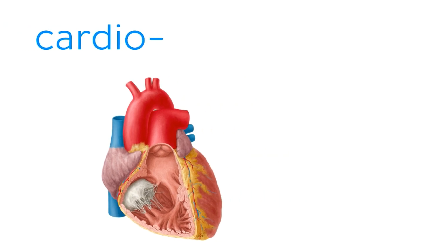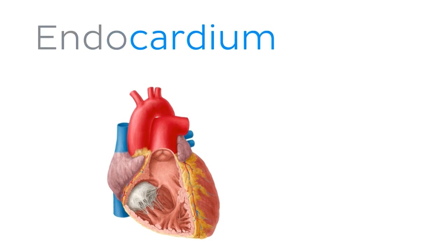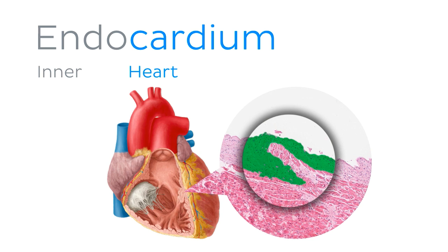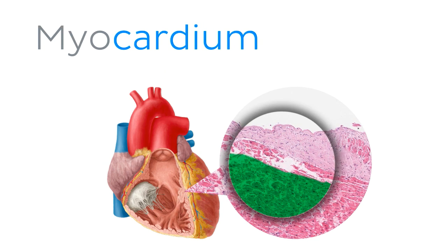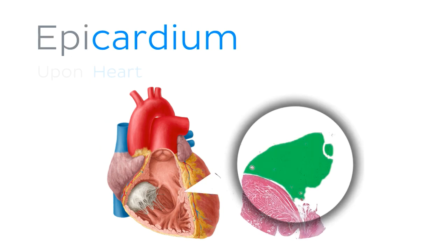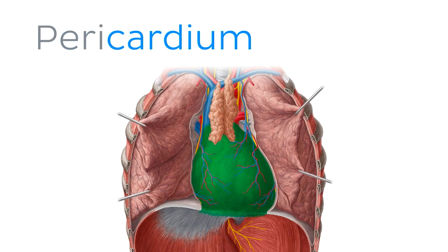For example, let's look at the layers in and around the heart wall, which all contain cardi or cardio in the name. The endocardium is the innermost lining of the heart wall. The myocardium is the muscle of the heart wall. The epicardium is the lining which lies directly upon the outer surface of the heart.